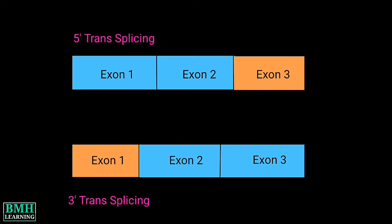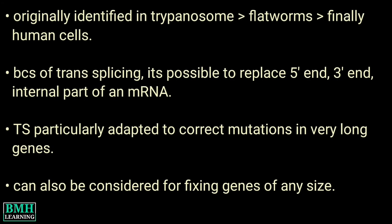This mechanism occurs naturally in eukaryotic cells and was originally identified in trypanosomes, then in flatworms, before being observed in human cells. Thanks to this mechanism, it is possible to replace a five prime and a three prime end or an internal part of an mRNA.